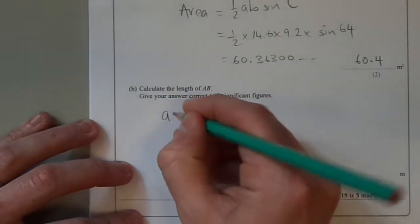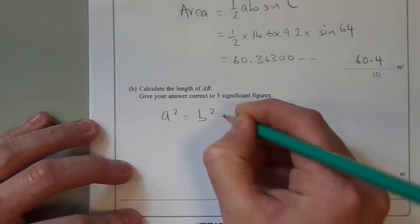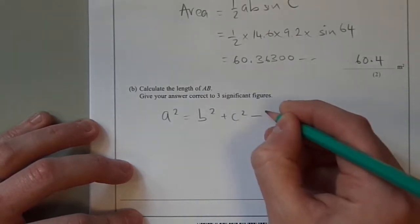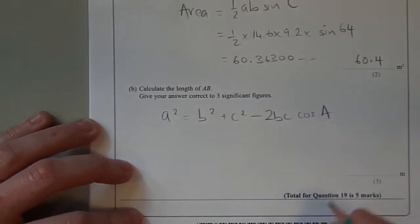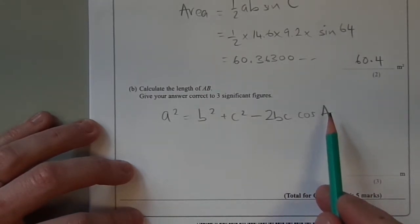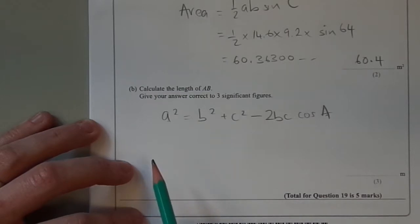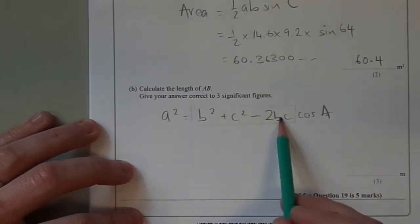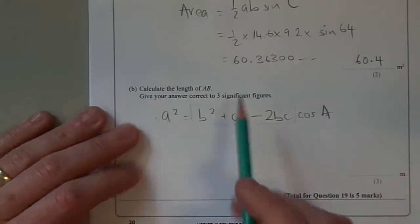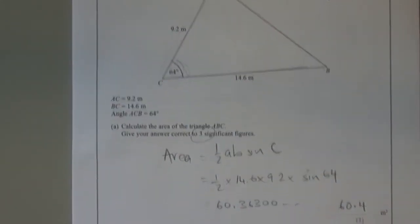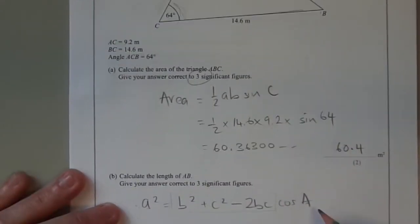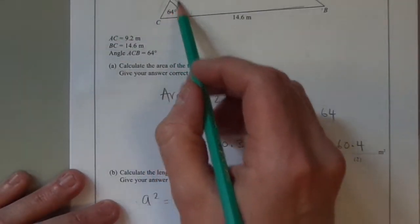The formula is A squared equals B squared plus C squared minus 2BC cosine A, where the angle that we've got is opposite the side that we want to find out. Notice as well that these are all the opposite letters to the one that's included over here. So the B and the C represent these two sides here, and the A is this angle.